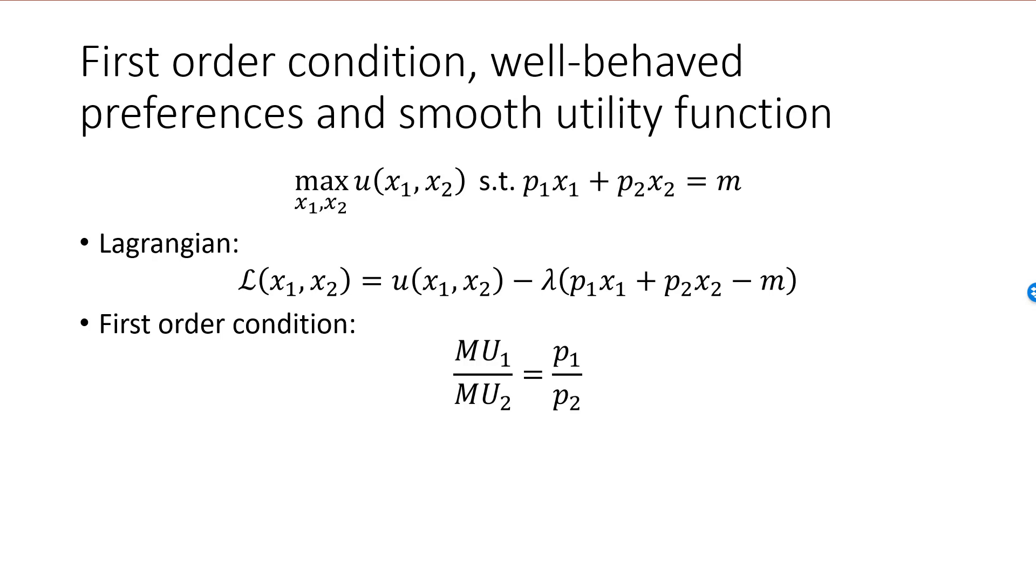If there is no bundle on the budget line satisfying the first order condition, then the optimal bundle must be a boundary bundle. Finding the optimal bundle in this case is simple. We simply evaluate the utility for the two boundary bundles on the budget line.